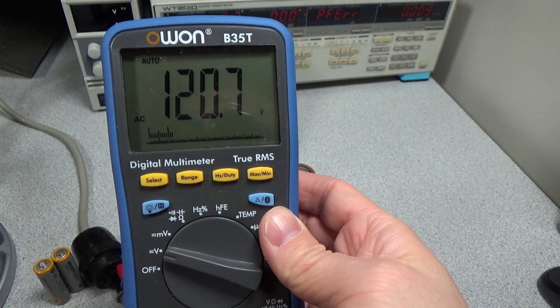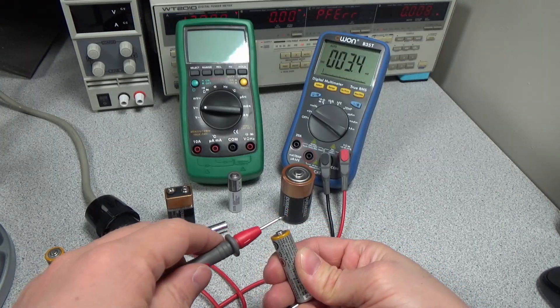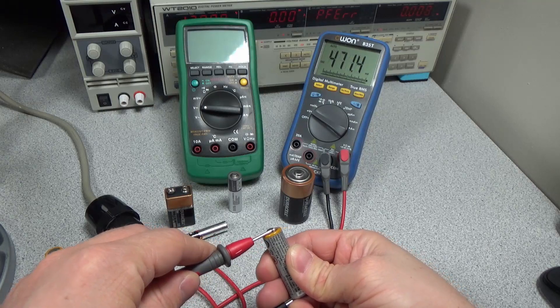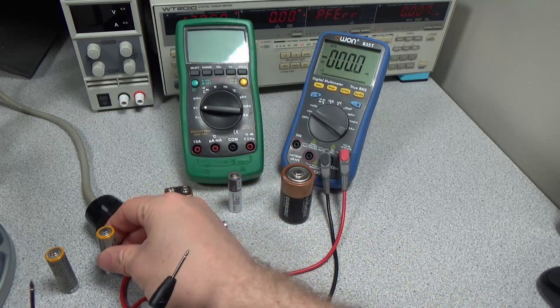The higher the voltage, the higher the pressure available to supply current to your device. The closer this number is to the rated number on the battery, the higher the state of charge. More volts doesn't mean more energy, but it can mean more power availability.